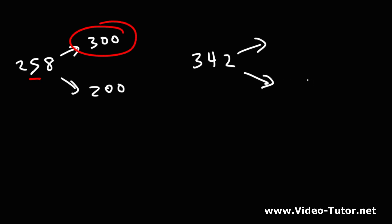For 342, should we round it down to 300 or up to 400? We're looking at the tens place. That digit is part of the four or less group, so we're going to round it down to 300.